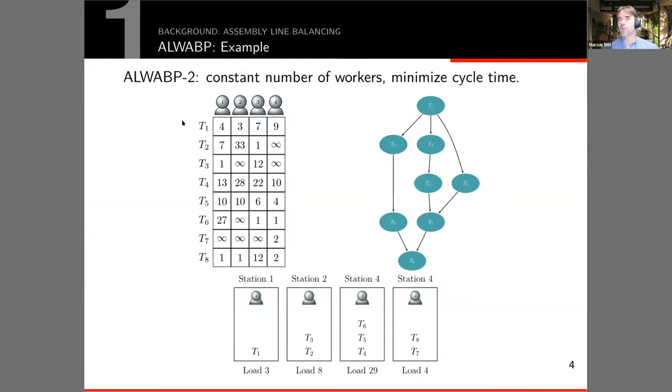Here's a very simple example with four workers and eight tasks. You can see the task-worker matrix, so the times can vary wildly with some infinities inside it. On the right-hand side you can see basically a transitively reduced DAG representing the precedence orders, and so you can then go ahead and produce solutions.